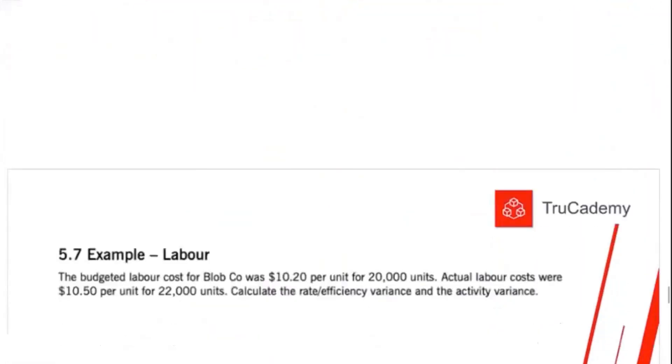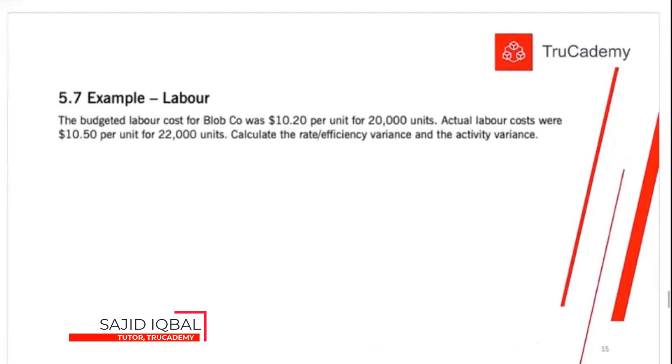Now let's go to the direct labor variance. The budgeted labor cost for Blob Co was $10.20. This is what we call standard price or standard cost. I'm using SP, but you need to understand it's a cost. So standard price that we are paying to labor is $10.20 per unit. This was our budget cost for the labor.